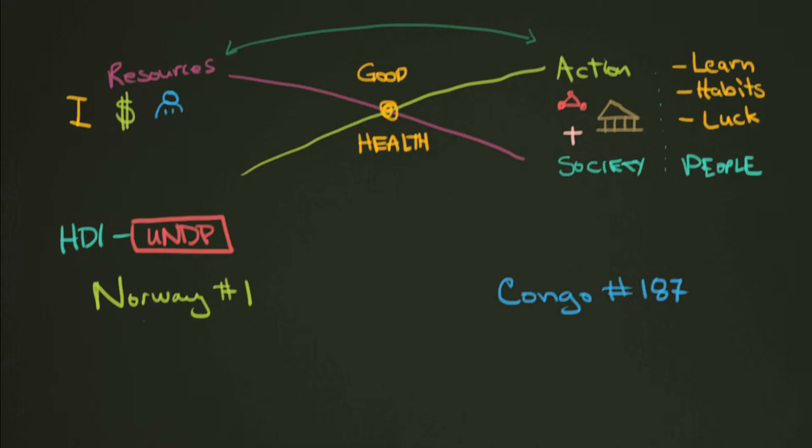And there are some really shocking numbers underneath these countries. The life expectancy, so if you're born today in Norway, you can expect to live to 81, actually, I think is what it said on the website. So let me change that to 81. And in Congo, it was 48.